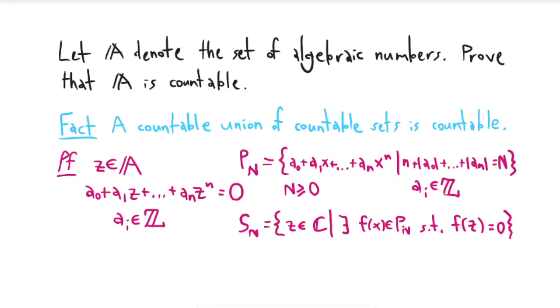And so again, this is a finite set. The reason that S_N is finite is because there's only finitely many polynomials in P_N, and each one of these polynomials has a finite number of complex number roots. Because if I have a polynomial of degree N, then over the complex numbers, it only has N roots. So in particular, this means that the cardinality of S_N is less than infinity, or S_N is finite.